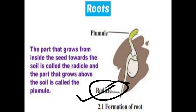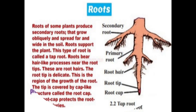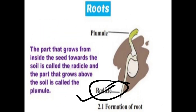The part of the plant growing below the soil for support is called the root. This is the root of a plant that is inside the soil and gives it support — that is the definition of root. So: the part of the plant growing below the soil for support is called root.